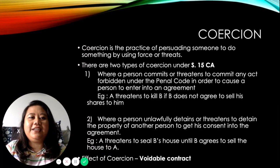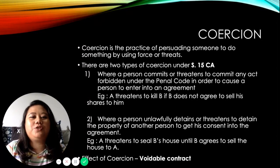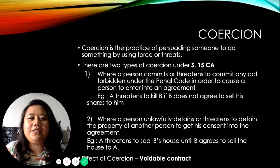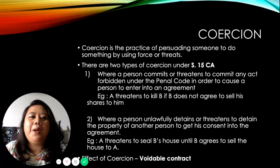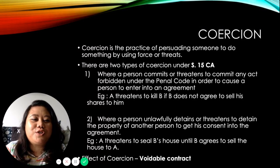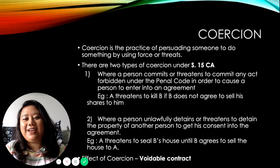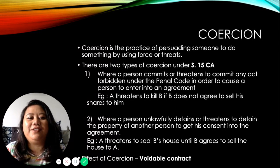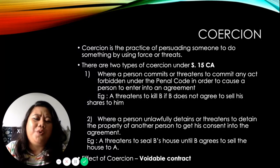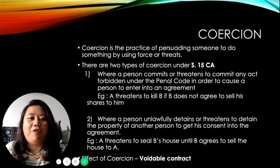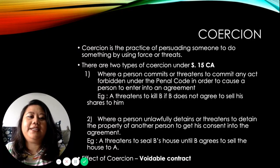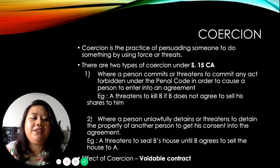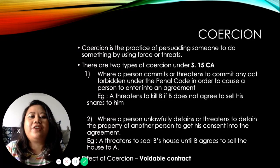The first vitiating factor is coercion. Coercion is the practice of persuading someone to do something by using force or threat — it is forcing someone to do something they don't want to do by force or threat. There are two types of coercion and these can be found under Section 15 of the Contracts Act.